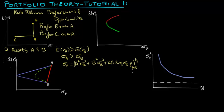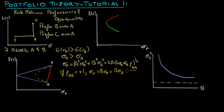An important unknown variable here is the correlation between Assets A and B. Let's suppose that the two assets are perfectly positively correlated. In that case, the volatility of the portfolio reduces down to the weighted sum of individual volatilities. In risk-return space, the feasible set becomes this straight red line that connects A and B, and as we vary the weights of A and B in the portfolio, we move along this straight line.